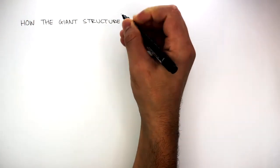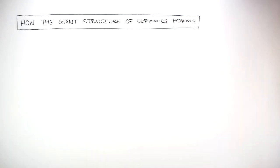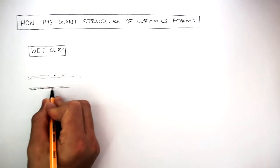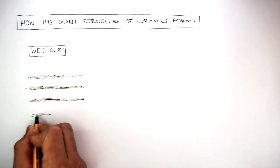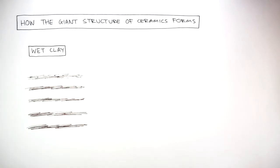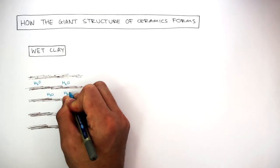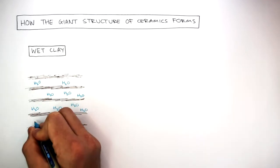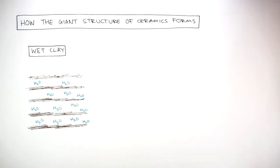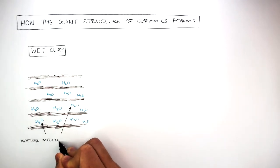We're now going to focus on how the giant structure of ceramics forms. Wet clay can be represented by layers of ions and atoms arranged in the giant structure. In between the layers of clay are water molecules found between the layers.